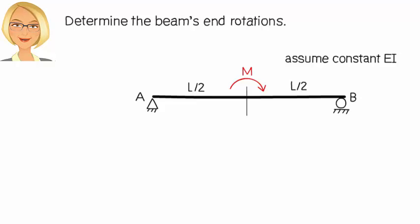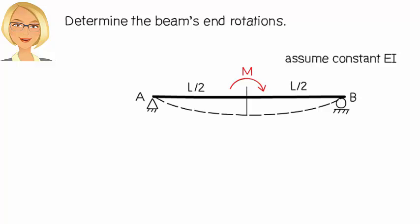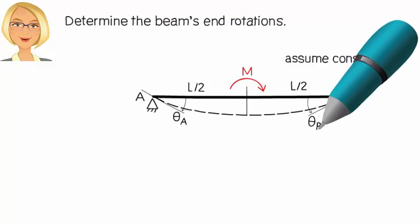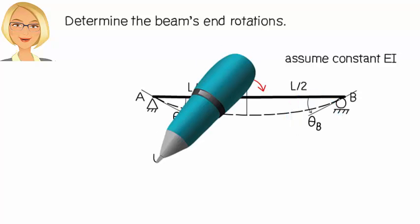I'm going to say the beam's deflection is downward, like this, which means A rotates clockwise and B rotates counterclockwise. Let's refer to the rotation at A as theta A and call the rotation at B theta B. According to the virtual work method,